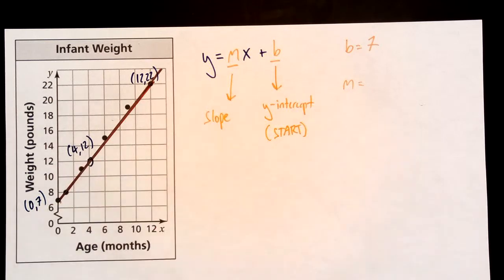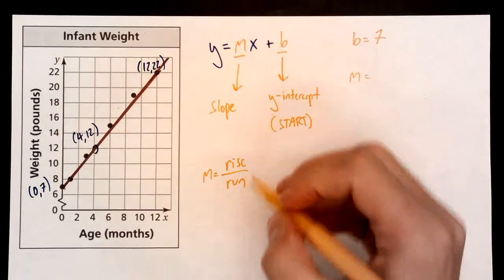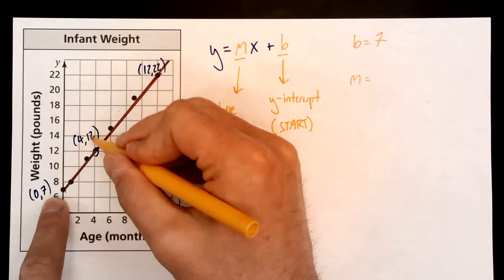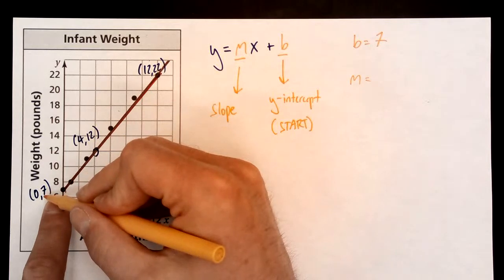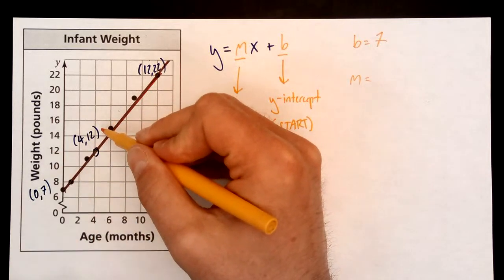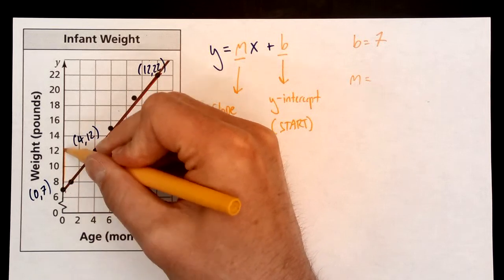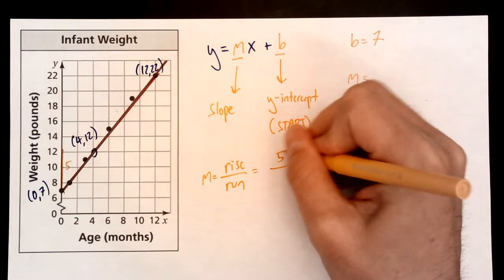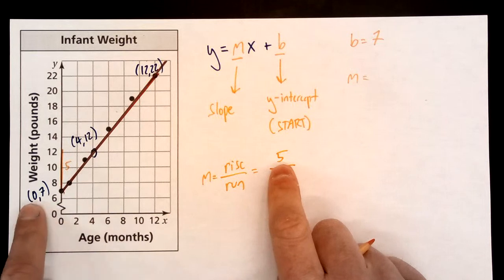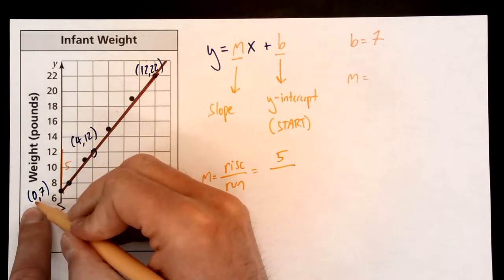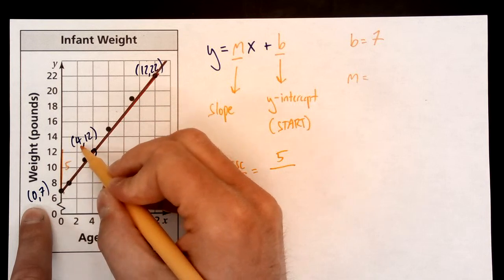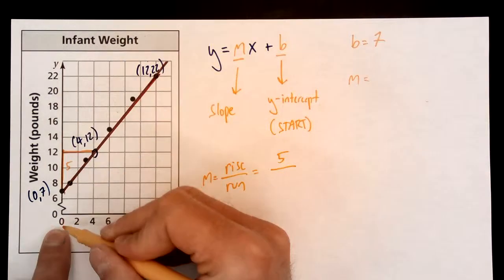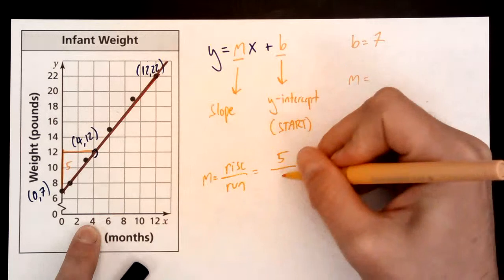So I need to find a rise over the run. And I can see a rise. Between these two points, I had to go from 7 up to 12. From 7 all the way up to 12, which is going up a grand total of 5. So my rise is 5. My run, I had to go from an x value of 0 over to 4. From 0 to 4, which is a run of 4.